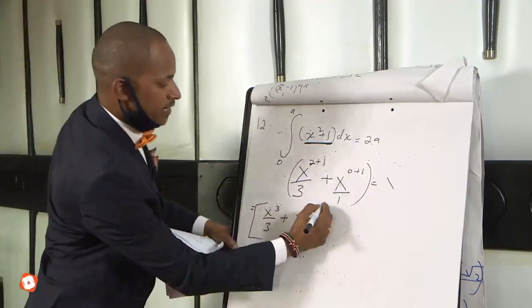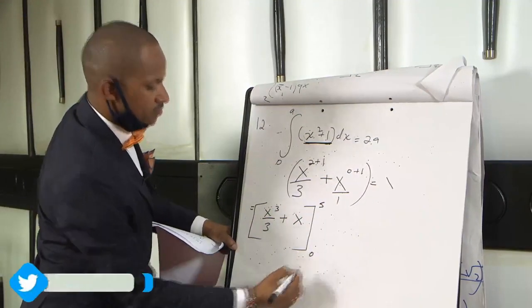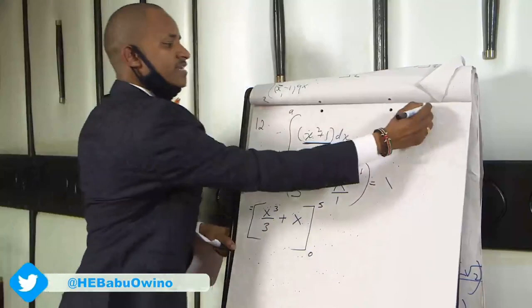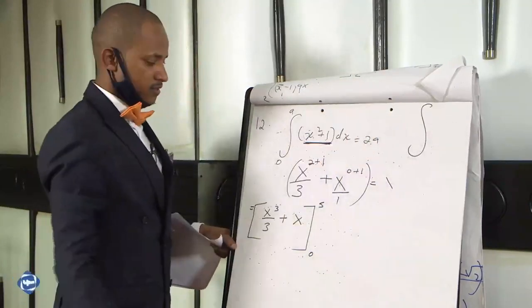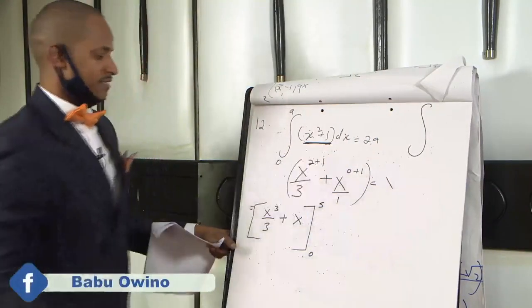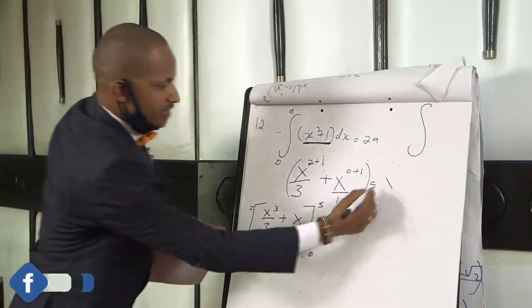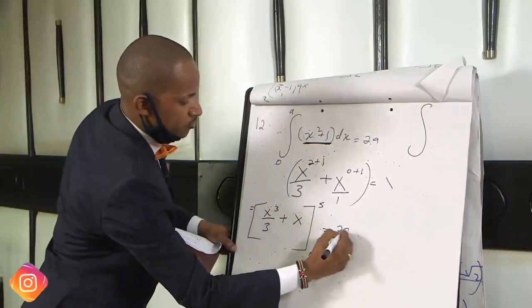You just replace it with the limits of A and 0. And again you don't write the integral sign because you've already integrated it. So this value equals to 2A.